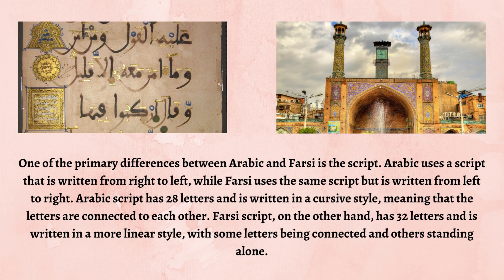One of the primary differences between Arabic and Farsi is the script. Arabic uses a script that is written from right to left, while Farsi uses the same script but is written from left to right. Arabic script has 28 letters and is written in a cursive style, meaning that the letters are connected to each other. Farsi script, on the other hand, has 32 letters and is written in a more linear style, with some letters being connected and others standing alone.